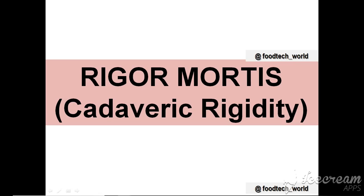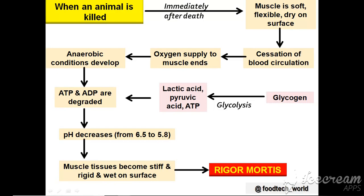The next topic is rigor mortis, also known as cadaveric rigidity. When an animal is killed, immediately after death the muscle is soft, flexible, and dry on the surface. This flexibility and softness reduces with time. After some time, blood circulation ceases, ending the oxygen supply to the muscles. Under anaerobic conditions, there is no ATP production, so ATP and ADP are degraded. ATP is required for relaxation of muscles by breaking actin-myosin cross bridges; without ATP, the cross bridges cannot break, resulting in no relaxation — so the muscles become stiff.